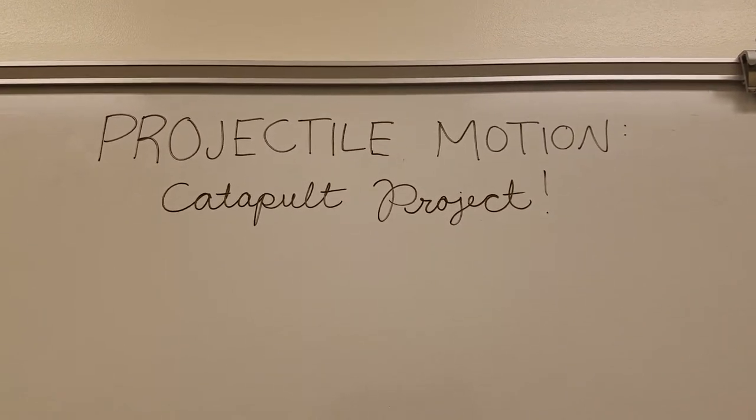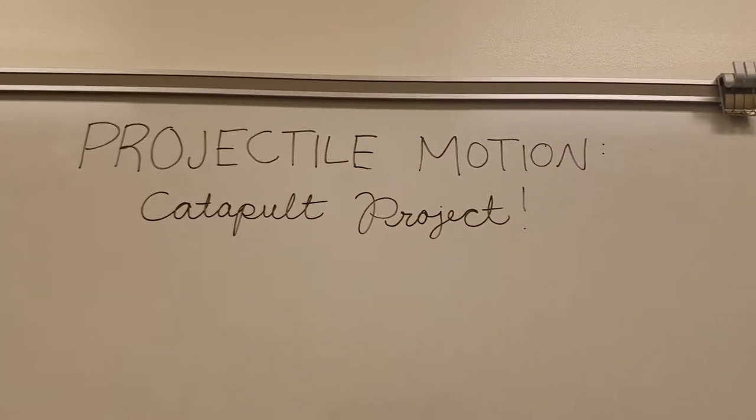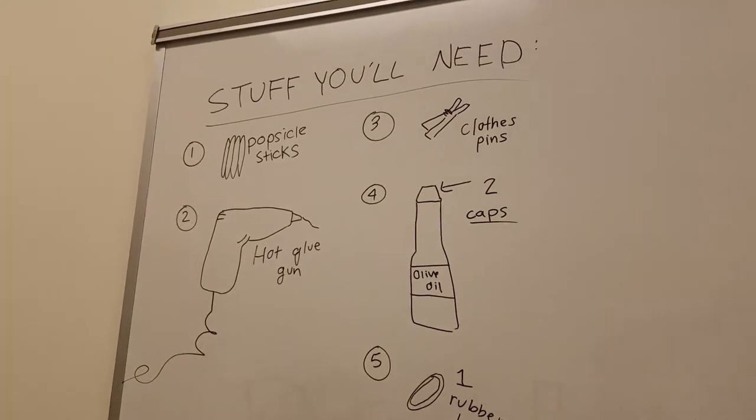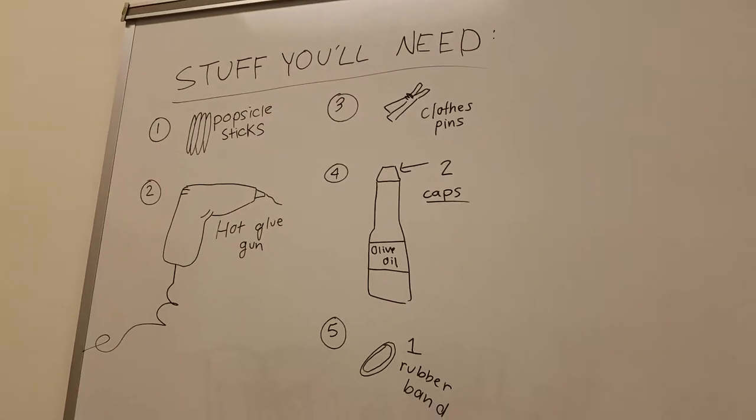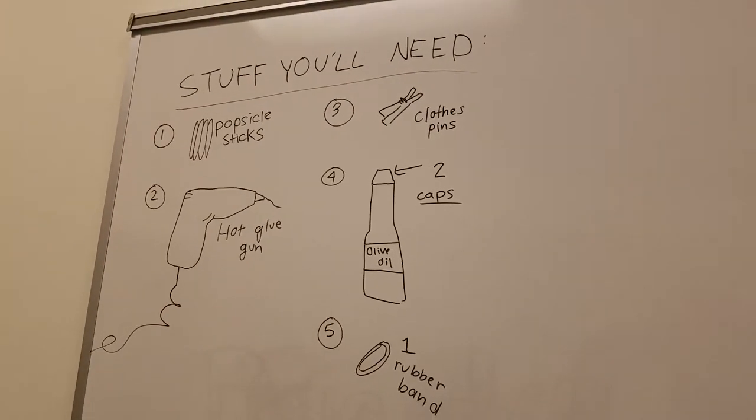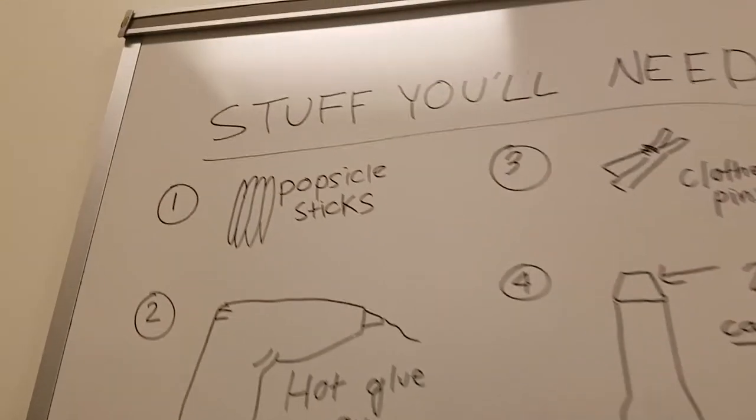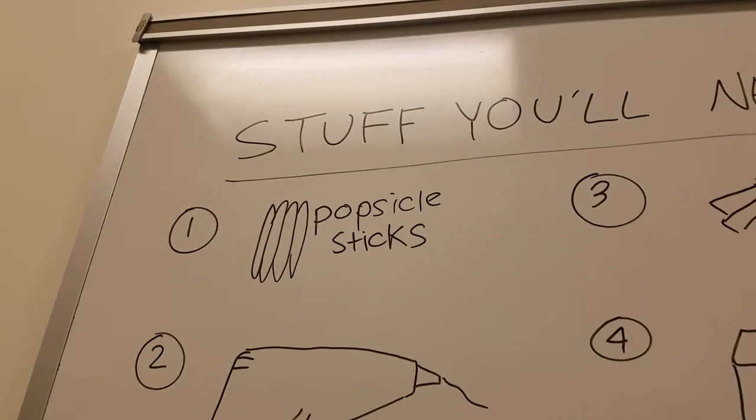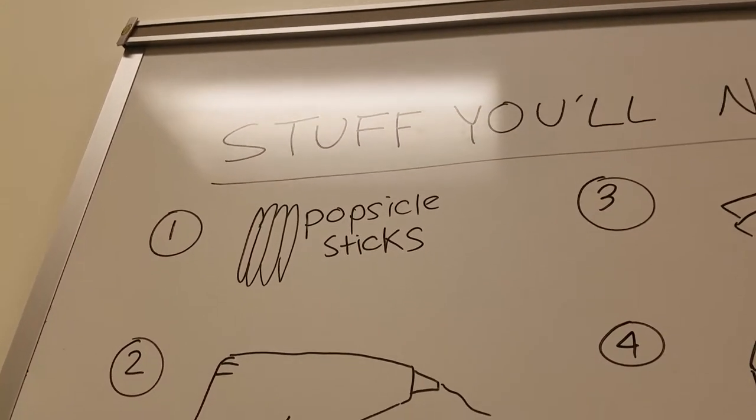First of all, let's talk about what you're going to need to buy to make a catapult. We used a fairly simple idea for our catapult, but it still requires about five things that you'll have to go out and purchase. Number one, you're going to need about twelve popsicle sticks. You need them to be a little bit bigger than the normal popsicle stick size. You'll need the hot wax variety of sticks.